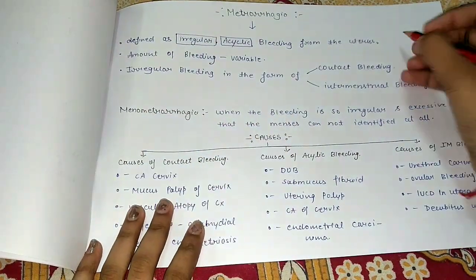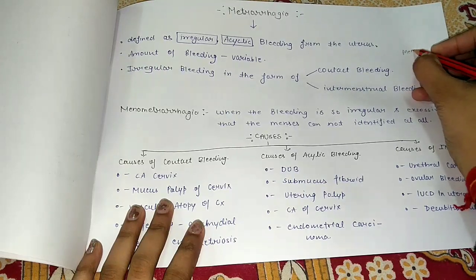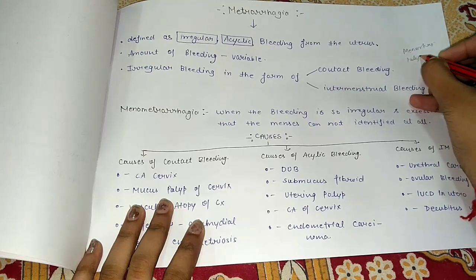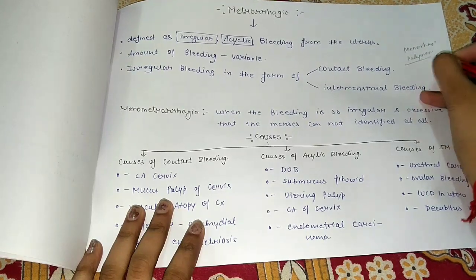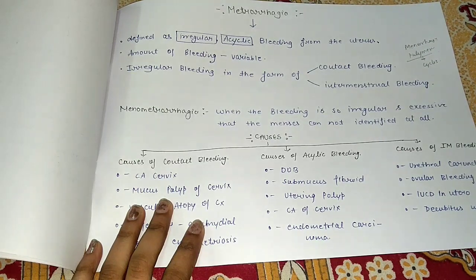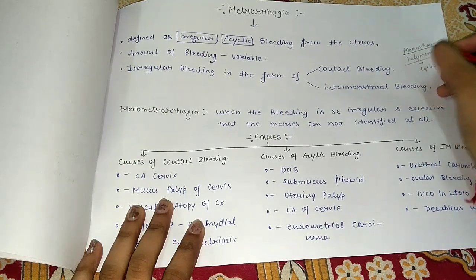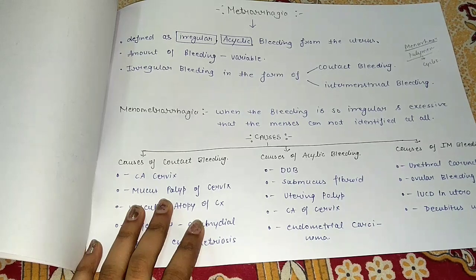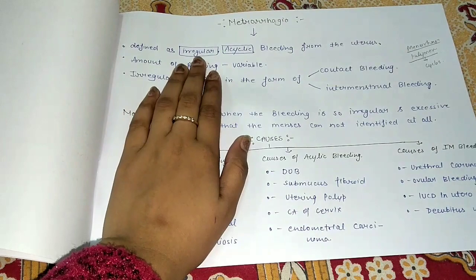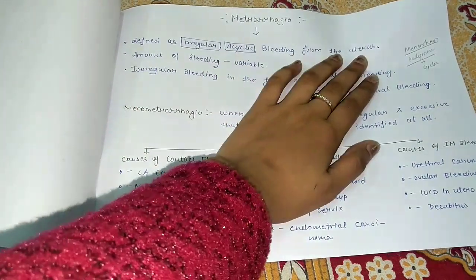We will now distinguish Metrorrhagia from Menorrhagia and Polymenorrhagia, which are both cyclic bleeding conditions. Menorrhagia is excessive bleeding, and Polymenorrhagia is bleeding occurring at intervals of less than 21 days. Today we will talk about Metrorrhagia, which is an irregular, acyclic bleeding from the uterus.